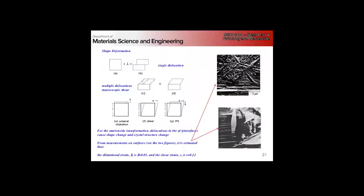We see slipped martensite often. We can see the lenticular martensite lath and the slip lines going up to it, showing the surface relief. A polished sample is allowed to undergo the martensitic transformation and then observed through a microscope, revealing the surface relief — classic examples of this accommodation.